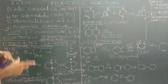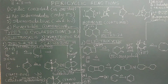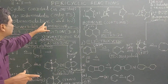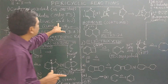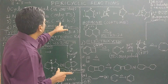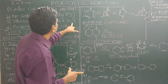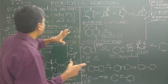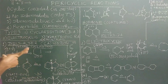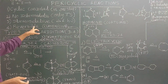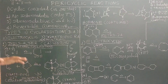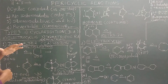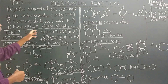Pericyclic reactions are very stereoselective, depending upon temperature and in the presence of light. They are stereoselective. They are also reversible reactions — pericyclic reactions are reversible reactions.